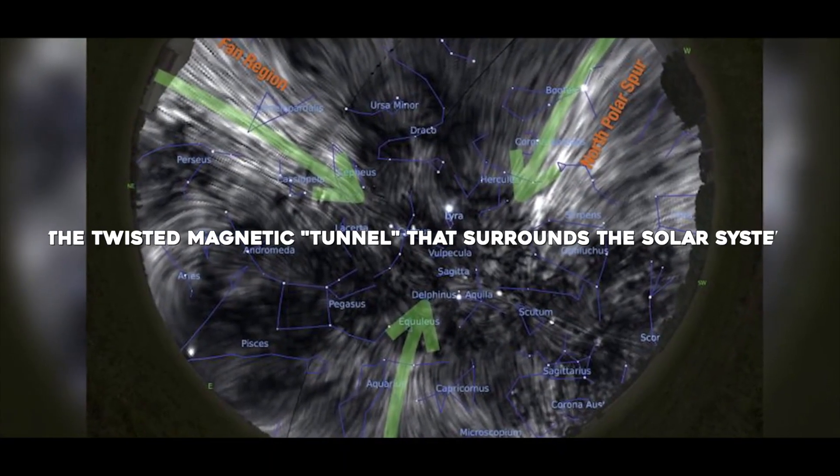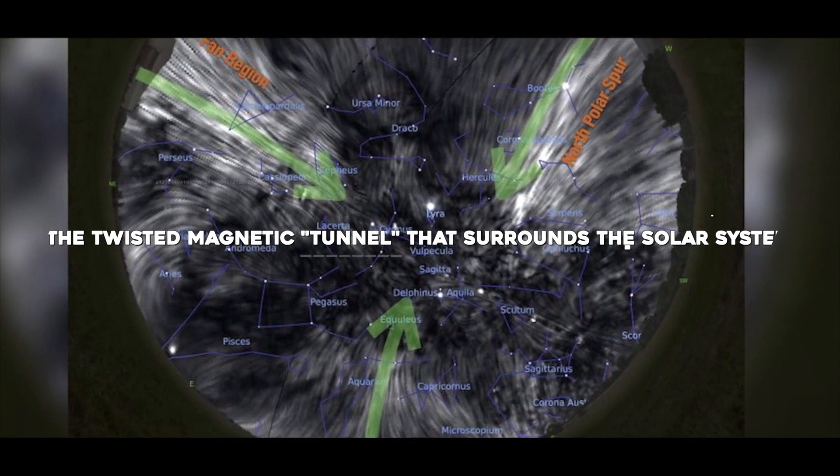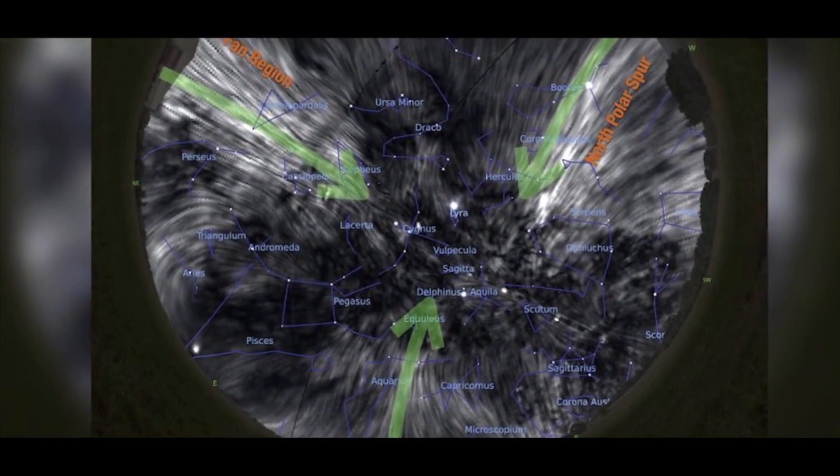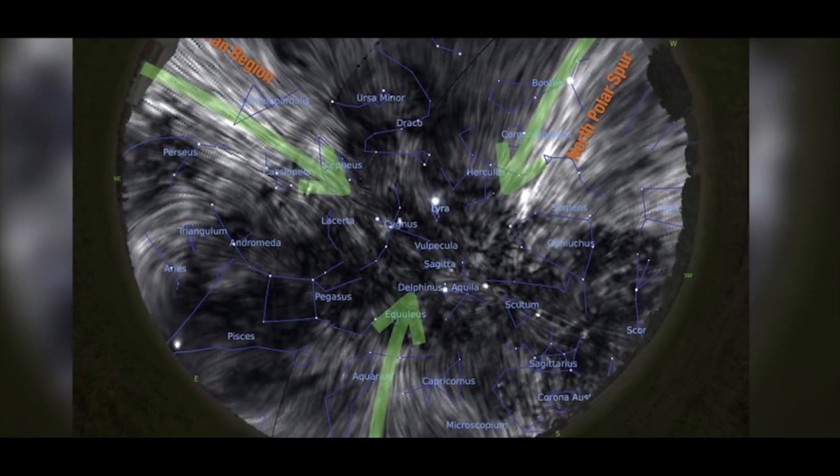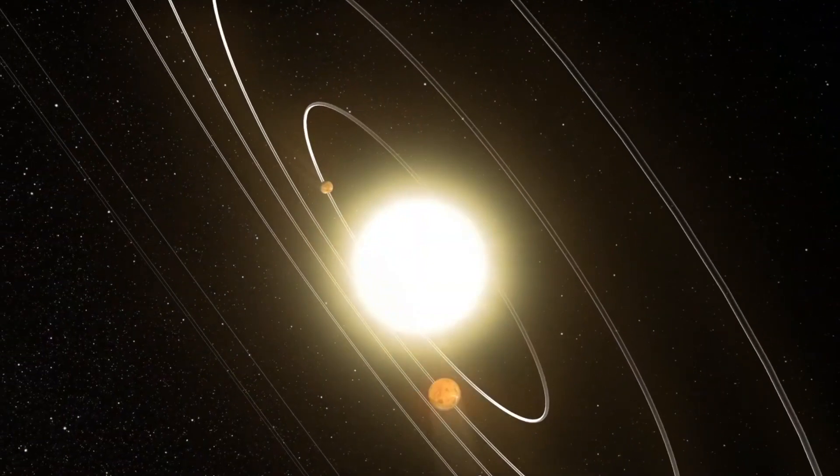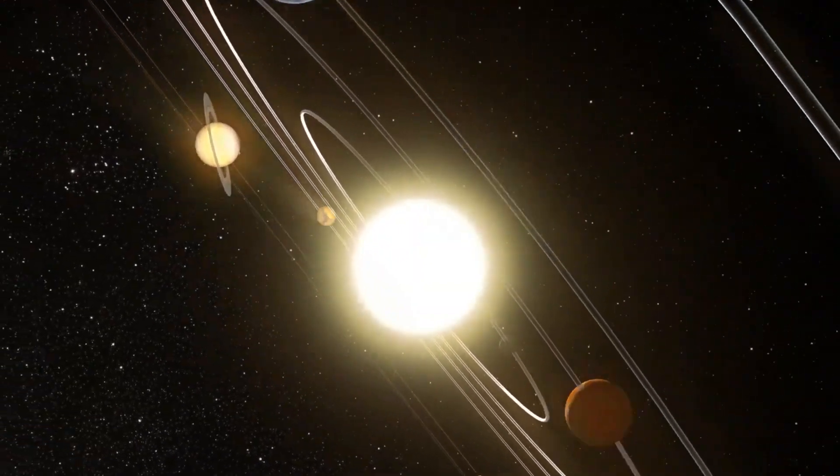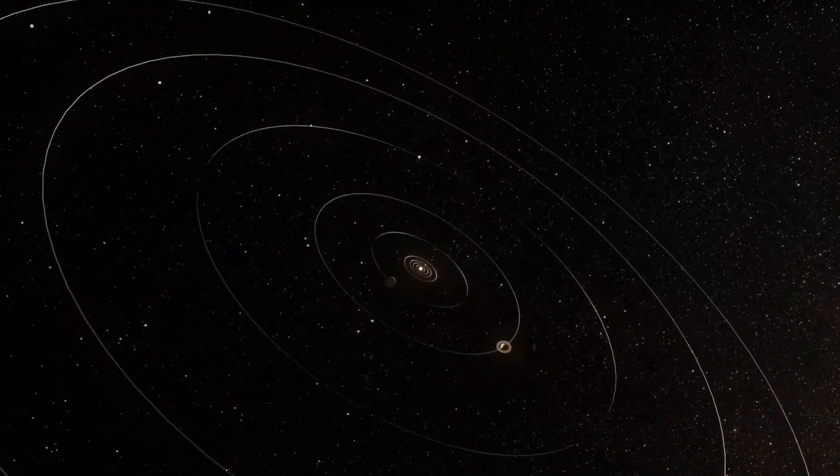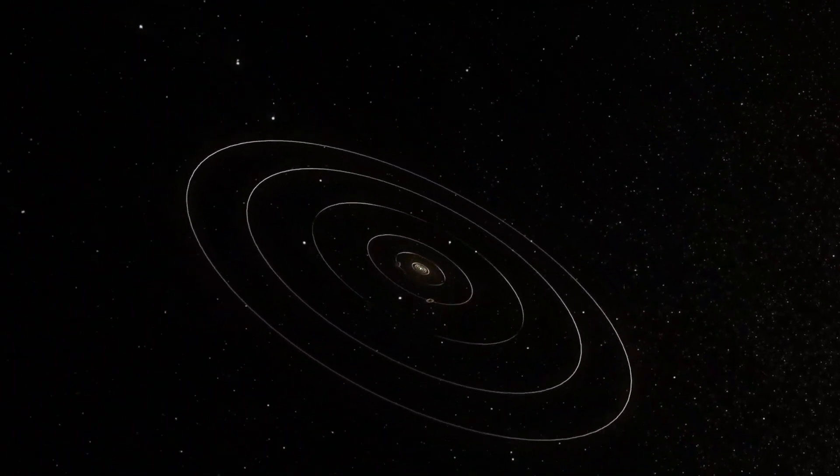Twisted magnetic tunnel that surrounds the solar system. Earth, along with the rest of the solar system and some nearby stars, may be trapped inside a gigantic magnetic tunnel, and astronomers don't know why. A tube of vast magnetized tendrils, 1,000 light-years long and invisible to the naked eye, may encircle the solar system, according to astronomers.